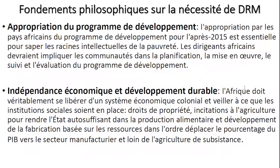En second lieu, l'Afrique doit véritablement se libérer d'un système économique colonial et veiller à ce que les institutions sociales soient en place, notamment les droits de propriété, les incitations à l'agriculture pour rendre l'État autosuffisant dans la production alimentaire et le développement de la fabrication, afin de déplacer le pourcentage du PIB vers le secteur manufacturier et loin de la culture de subsistance.